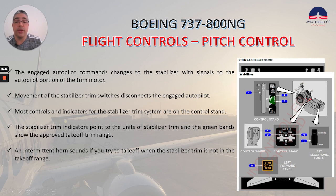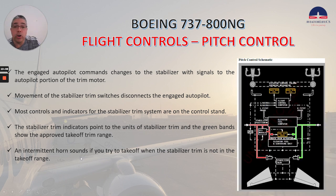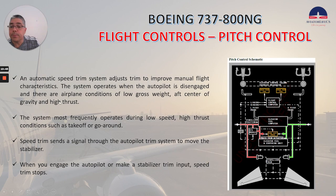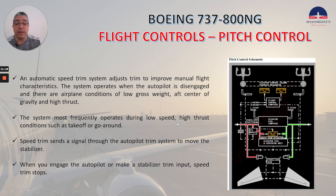The stabilizer trim indicators point to the units of stabilizer trim, and the green band, as you can see here, shows the approved takeoff trim range. An intermittent horn sounds if you try to take off when the stabilizer trim is not in the takeoff range. An automatic speed trim system adjusts trim to improve manual flight characteristics. The system operates when the autopilot is disengaged and there are conditions of low gross weight, aft center of gravity, and high thrust — most frequently during low-speed, high-thrust conditions such as takeoff or go-around. Speed trim sends a signal through the autopilot trim system to move the stabilizer. When you engage the autopilot or make a stabilizer trim input, the speed trim stops.